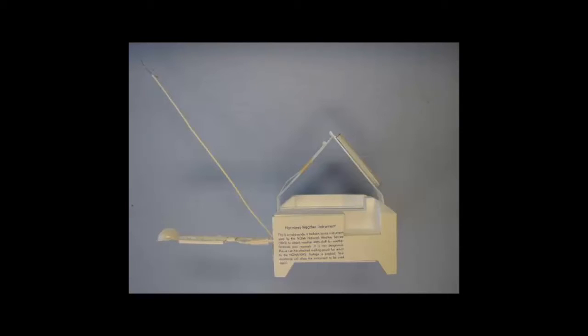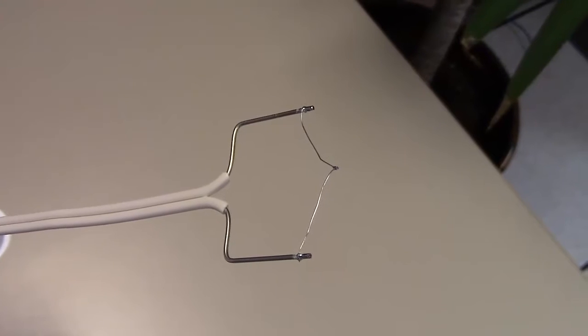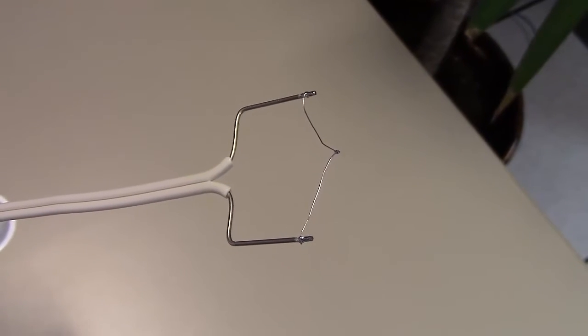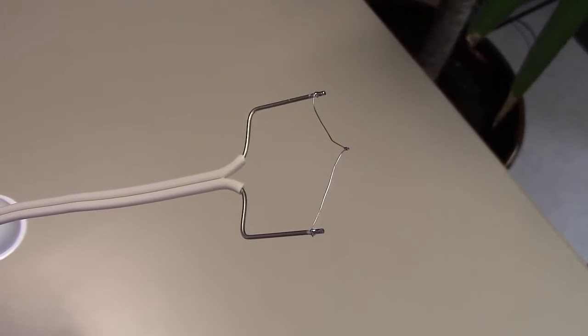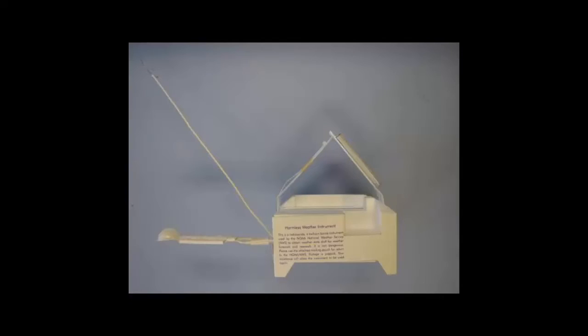The boom seen going out at about a 45-degree angle coming out of the radiosonde body is called a thermistor. A thin rod comes out of the boom at the end. Electrical resistance will change along the rod as the temperature changes, which is how we measure temperature values.